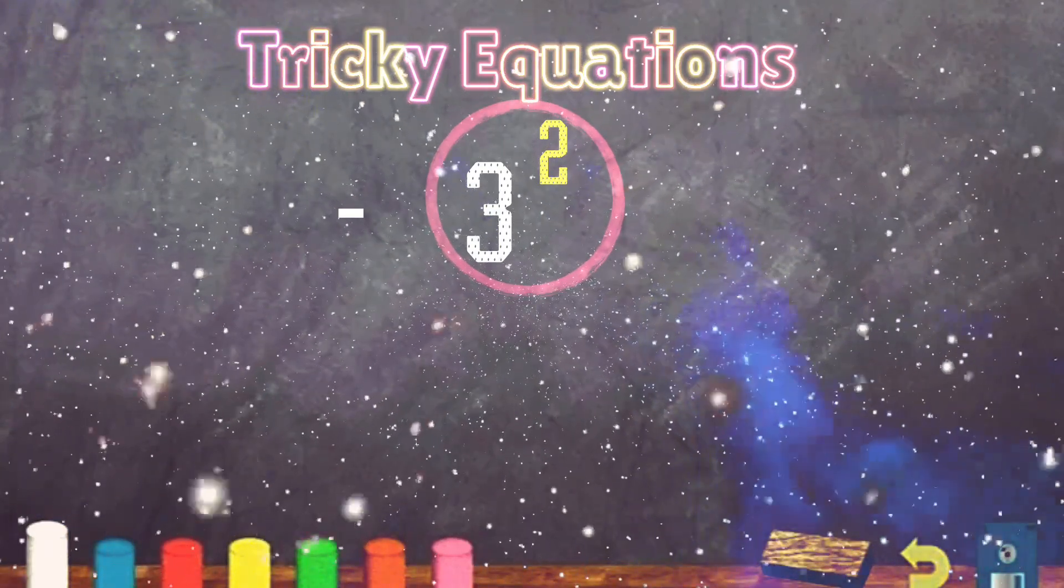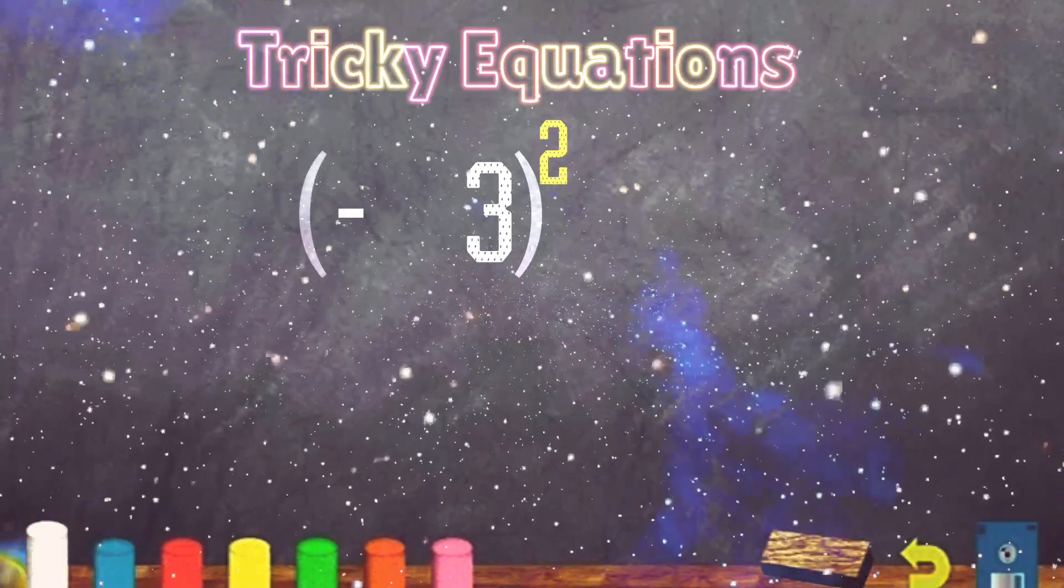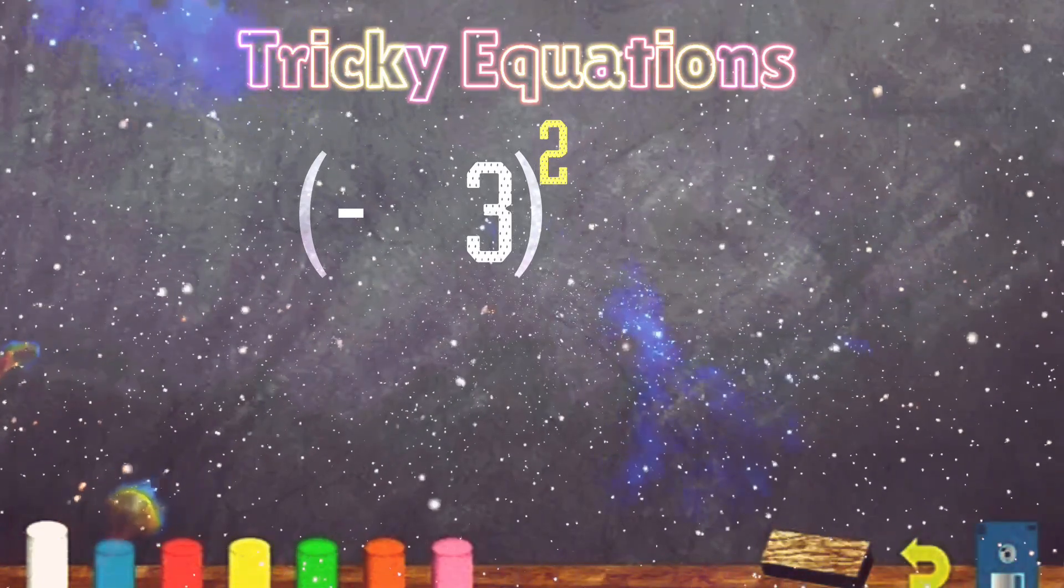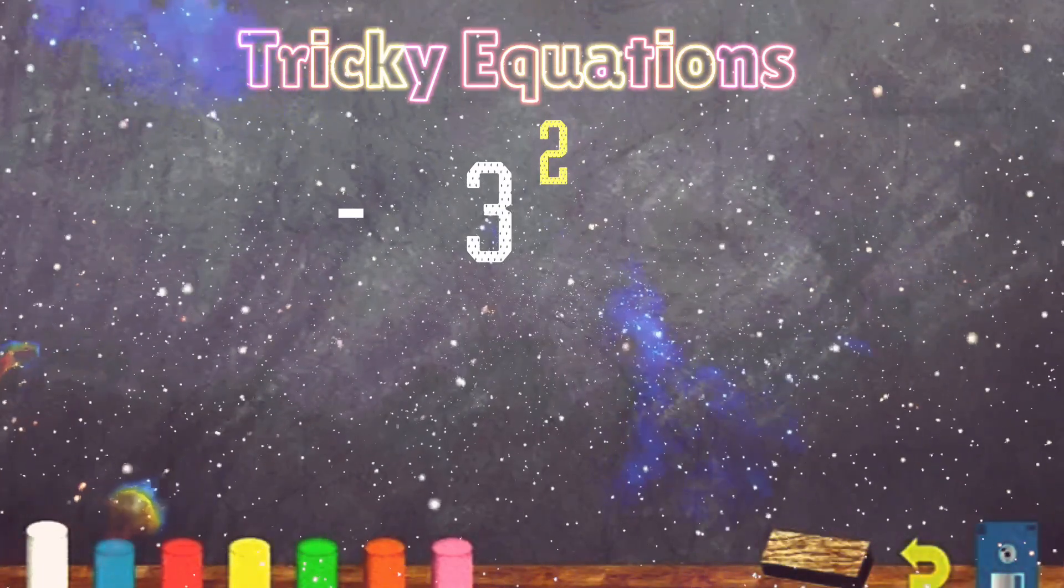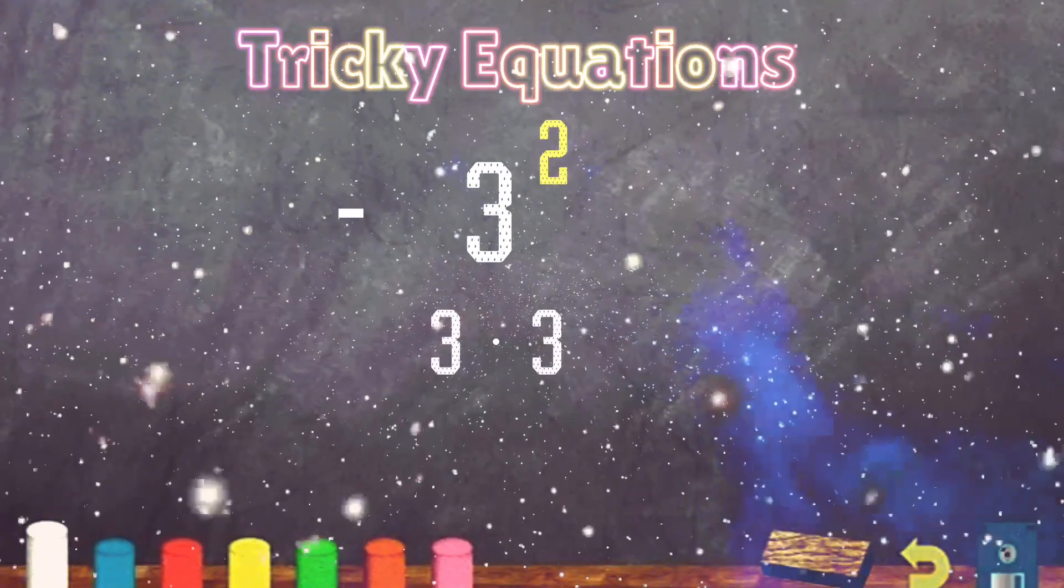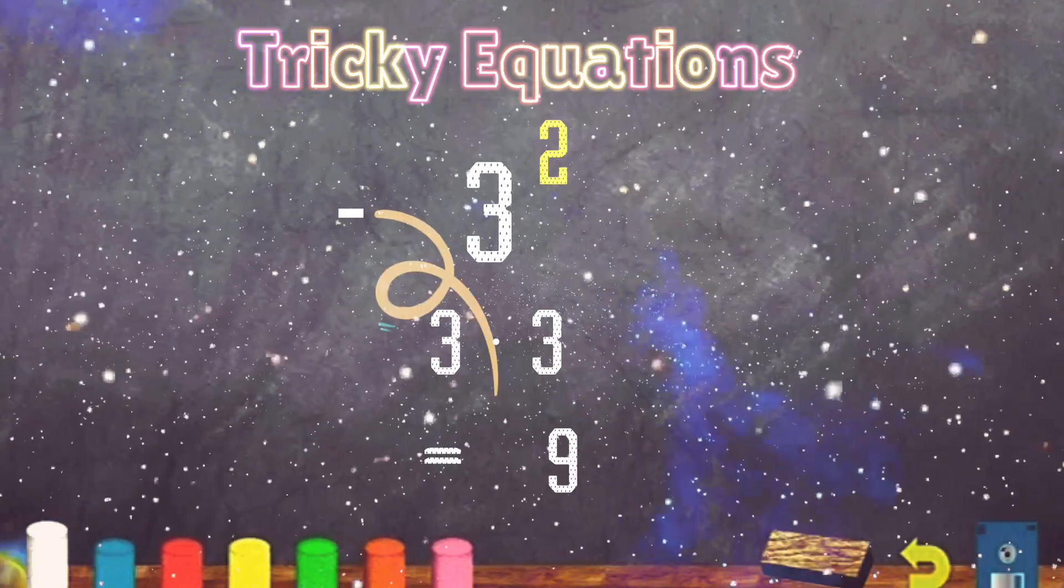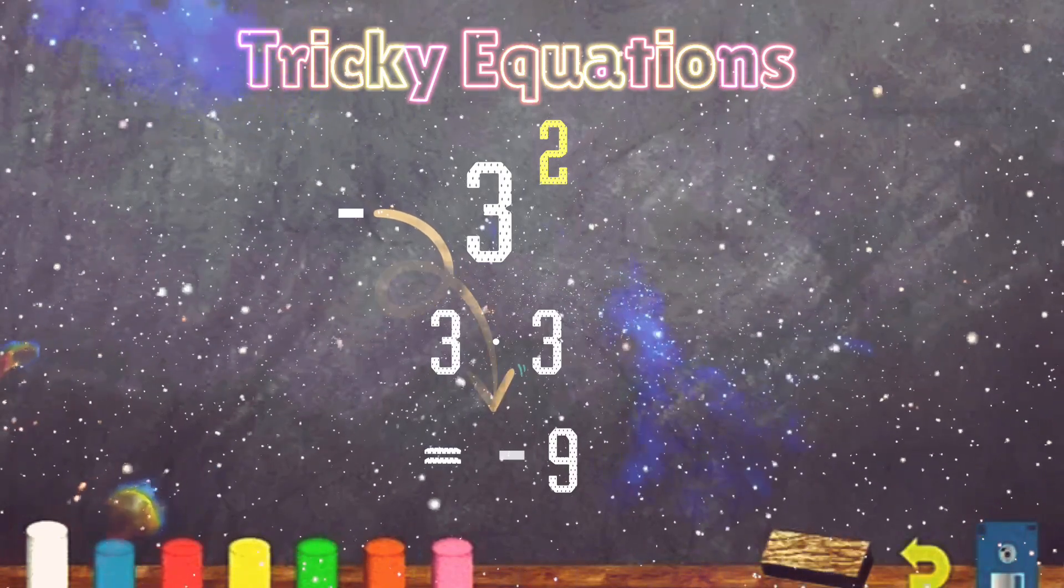If there had been a parentheses around both the negative and the 3 like in the last problem, then the exponent would have applied to both the negative and the 3. So let's square the number 3. 3 times 3 equals 9. Now we bring down the negative and our answer is negative 9.